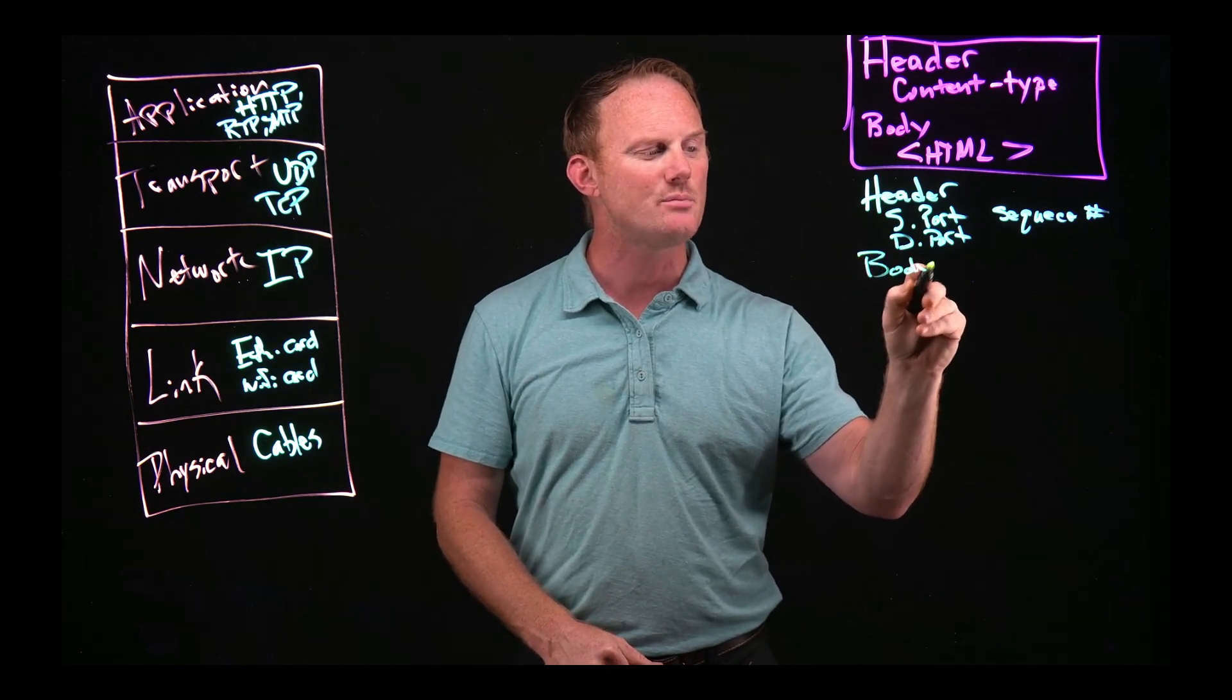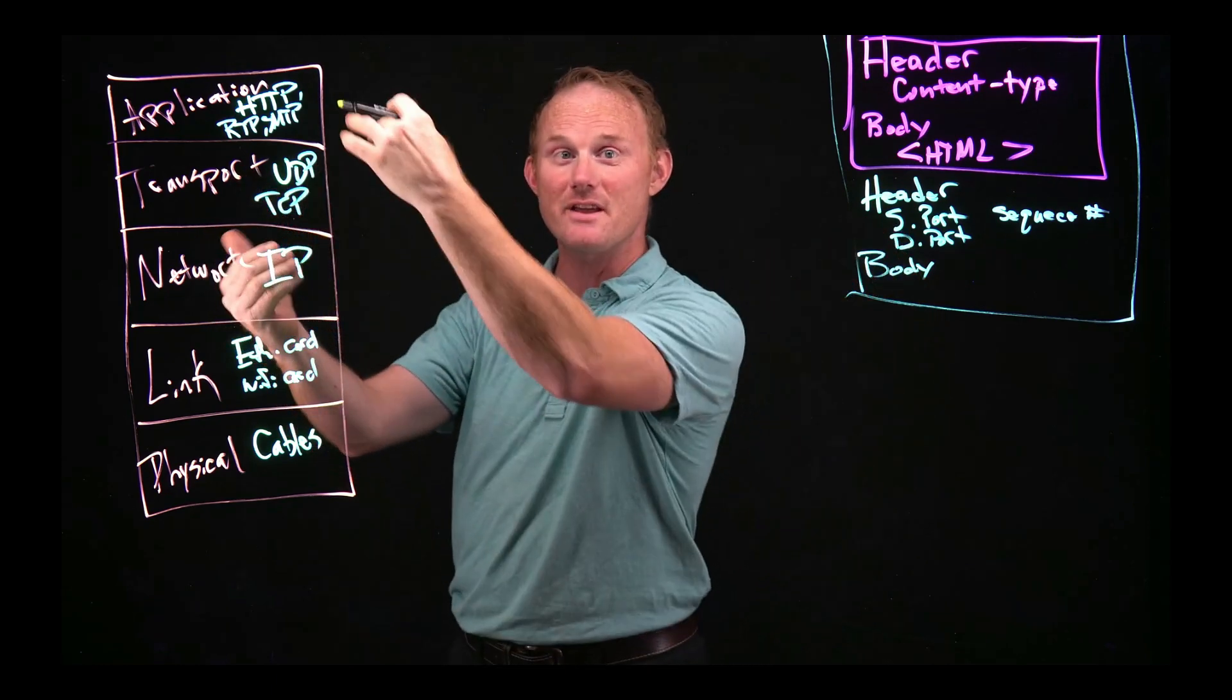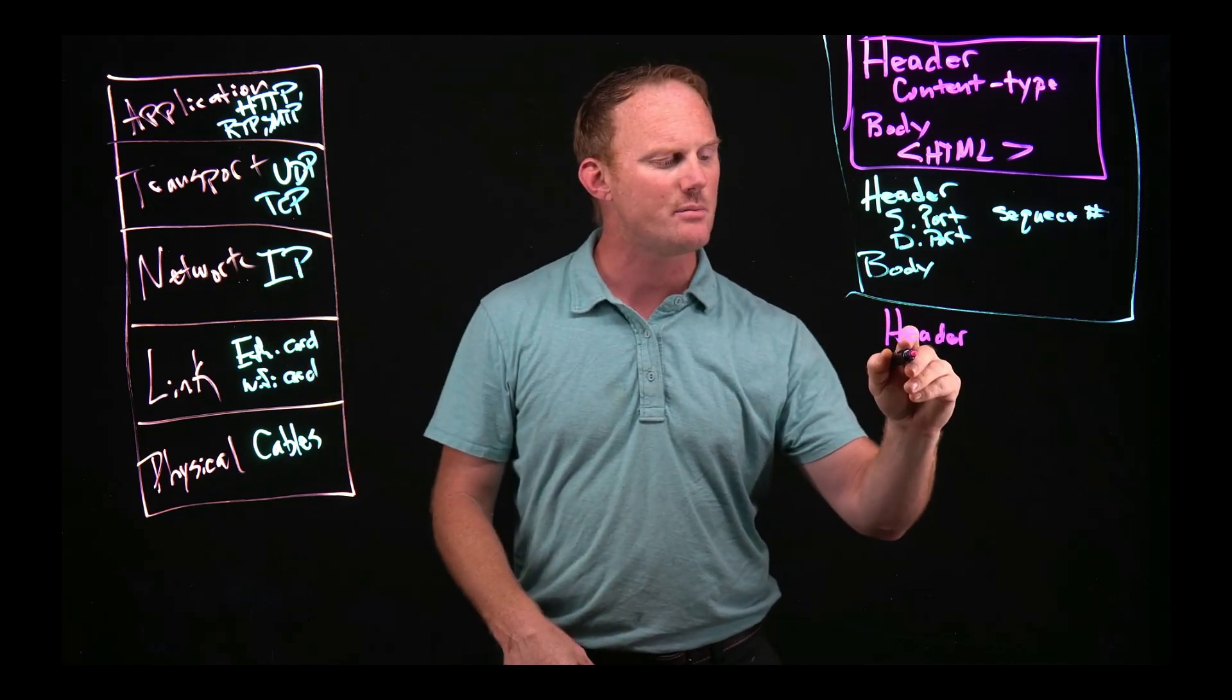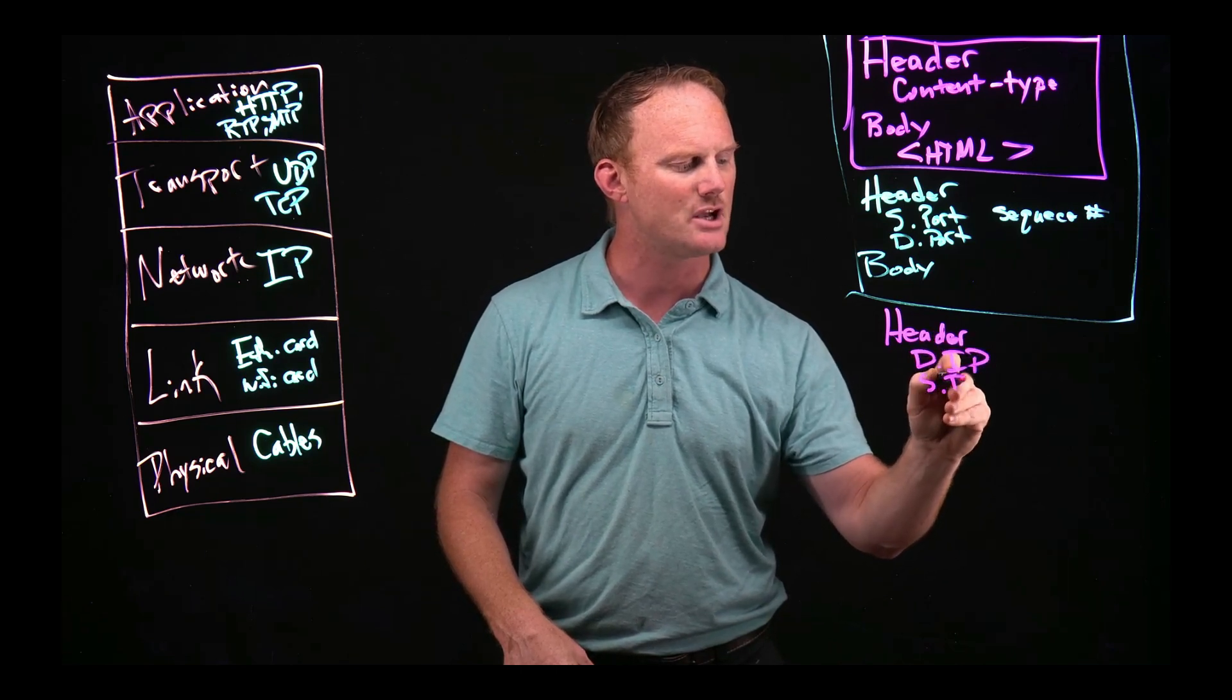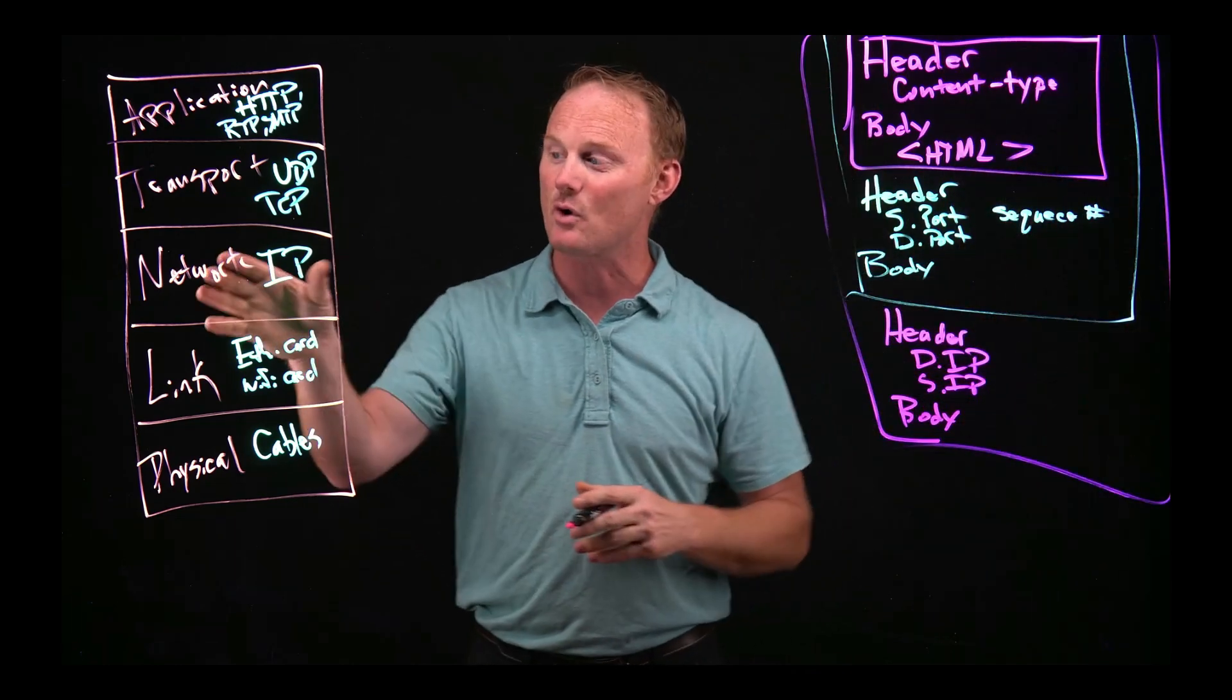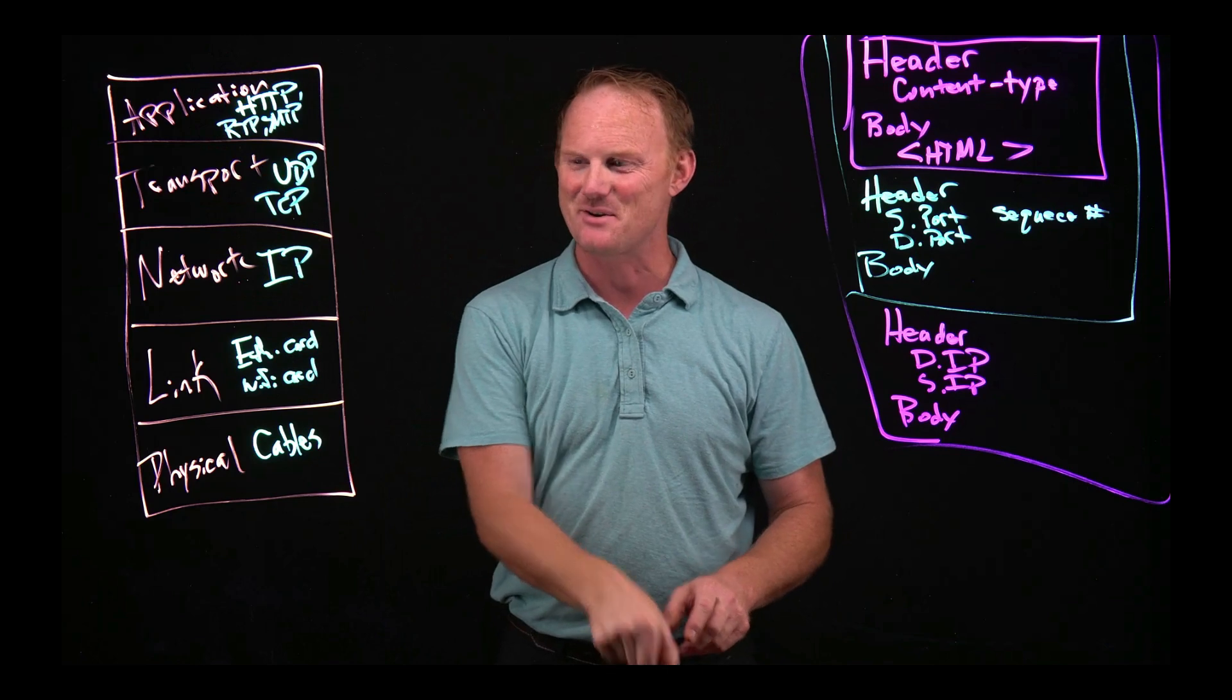The body is going to be the entire application layer. That's the body for transport. It's everything above that. We go to the next one. The header for the network layer is going to be things like the destination IP address, the source IP address. It will also have a body and that body will contain everything above it. Or rather, the network contains transport and transport already contains application. You probably see where this is going.